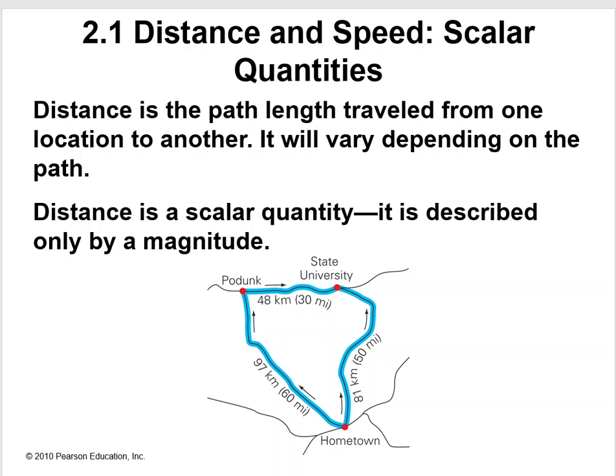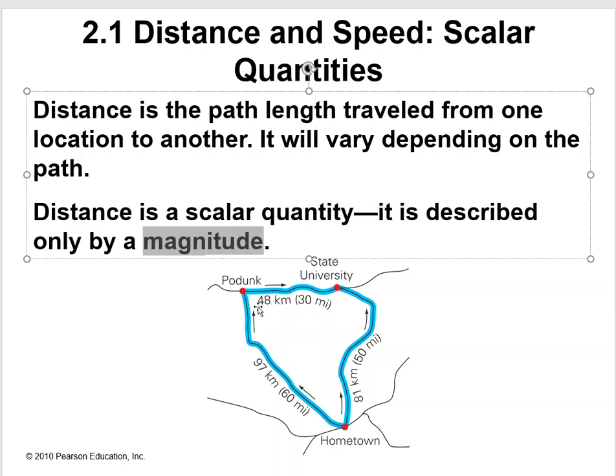In this case right here, they are showing us the distances. They're not necessarily giving us any direction, just giving us distance. It's 48 kilometers or 30 miles from Podunk to State University. They're not telling us that it's east. They're giving us 81 kilometers or 50 miles from hometown to State University. These are distances because they're just giving us a length or a magnitude. That's the key word there. Magnitude is the number, the 48 kilometers.